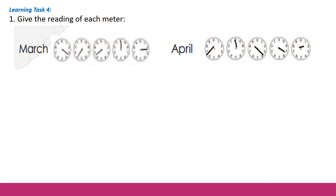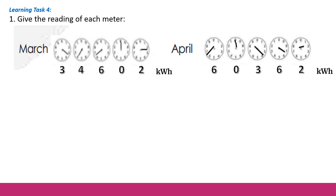Learning Task number 4: Give the reading of each meter. We have readings for March and April. Reading the dials from right to left for March, we get 2, then moving left: 0, 6, 4, 3. Since this is an electric meter reading, the March reading is 34602 kilowatts. For April, we have 60362 kilowatts.